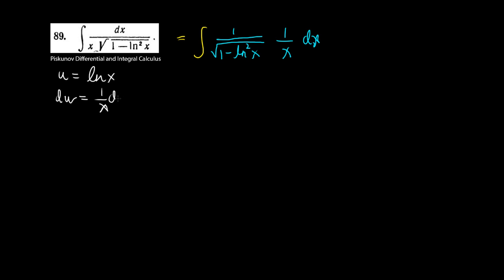So we substitute u to be the natural log of x. We take the derivative of both sides, we get 1 over x dx which is equal to du. So this implies that this becomes the integral of 1 over the square root of 1 minus u squared times du.